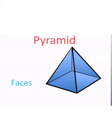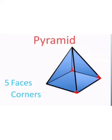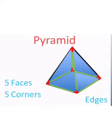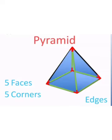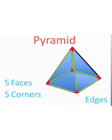A single flat surface is called a face. Here you can see five faces of a pyramid. A corner is the meeting point where two or more lines meet. Here you can see five corners. An edge is a line segment where two faces meet. Here you can see eight edges of a pyramid.